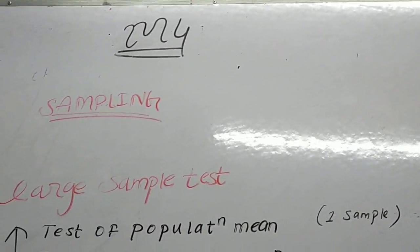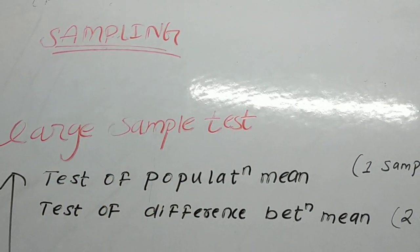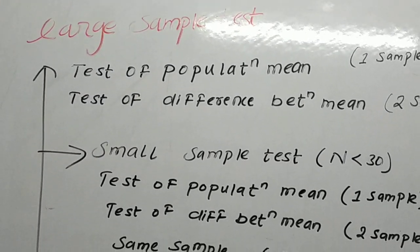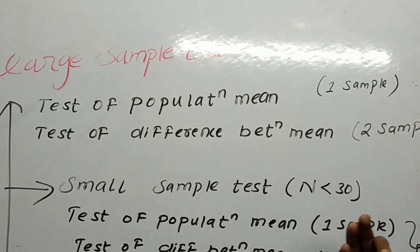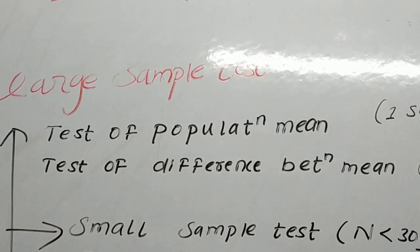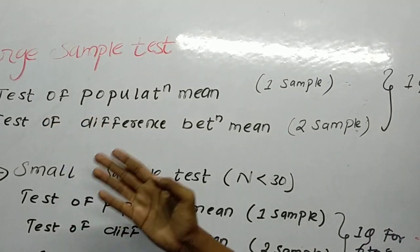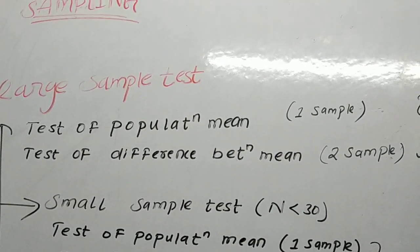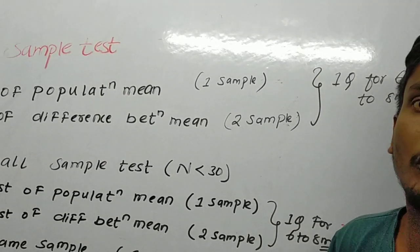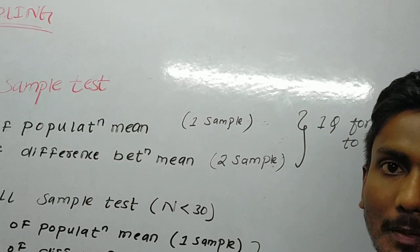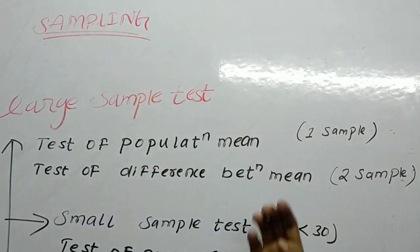The last chapter for M4 is sampling. There are four to six topics and it is the simplest, easiest chapter in M4. If you want to pass or if you have any backlog, prefer this chapter because the topics are almost the easiest, and you can still score 80 out of 80 if you follow these types of questions.